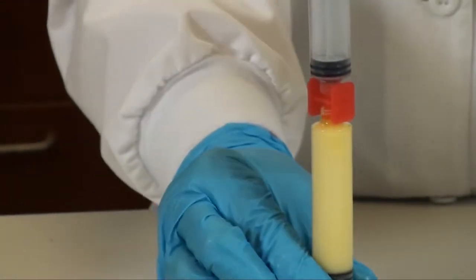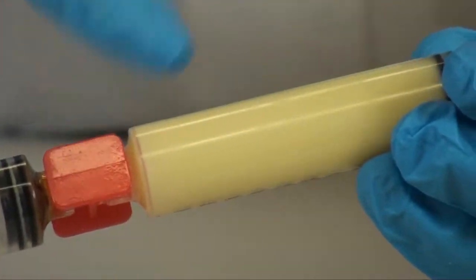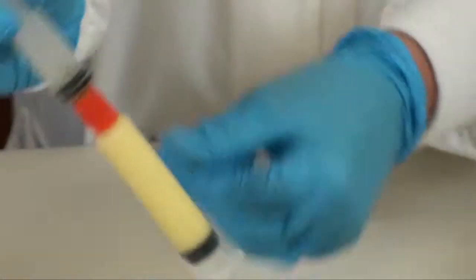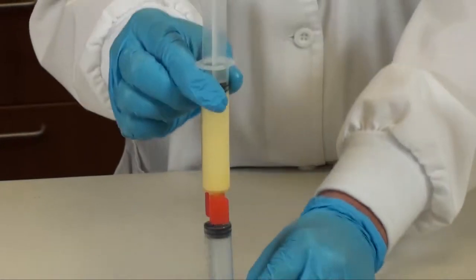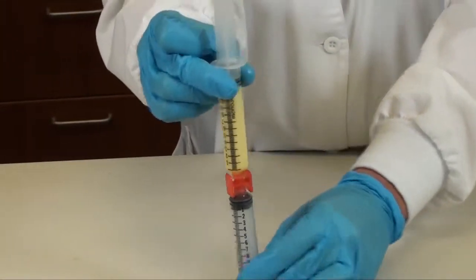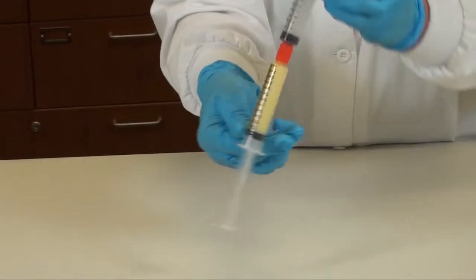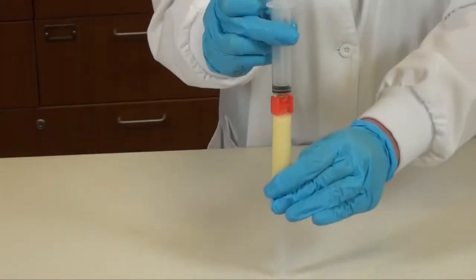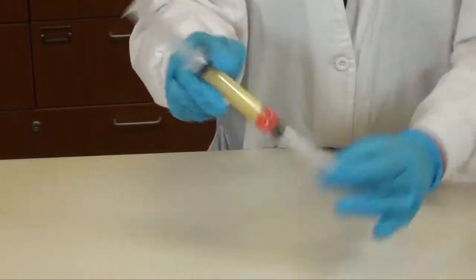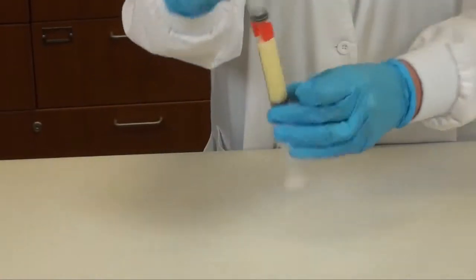You will want to check periodically for any dark yellow swirls because that means that the PLO gel is not uniformly mixed yet. Keep doing this and I recommend that you, if you want to count, it's probably about 50 times.